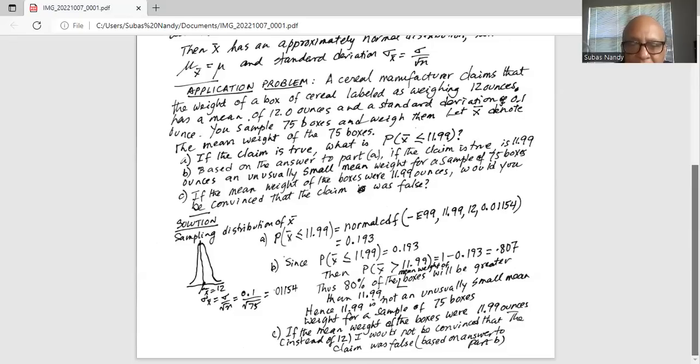Thus, 80% of the mean weights of the boxes will be greater than 11.99. Hence, 11.99 is not an unusually small mean weight for a sample of 75 boxes.